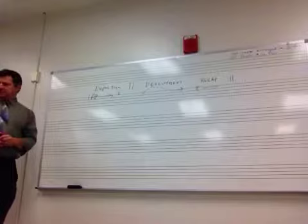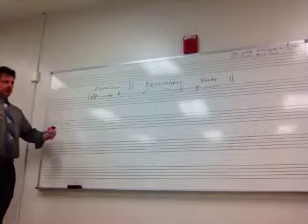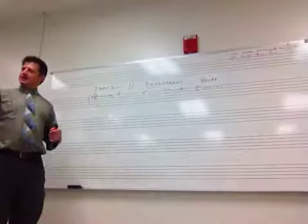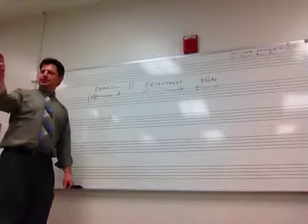Over time, particularly at the hands of Beethoven, sonata form begins to grow so large that repeating the development is superfluous and actually creates too big a structure. So this repeat eventually goes away, and in performance today we see those repeats in Mozart, but we never take them.